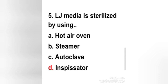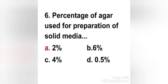Media containing serum or egg is sterilized by heating for three successive days. Next question: what percentage of agar is used for preparation of solid media? Options: 2%, 6%, 4%, 0.5%. Agar is typically used at a concentration of 1 to 2% for solidifying culture media. Smaller quantities, such as 0.5%, are used in media for motility studies, and 0.1% is used for growth of anaerobes and microaerophiles.